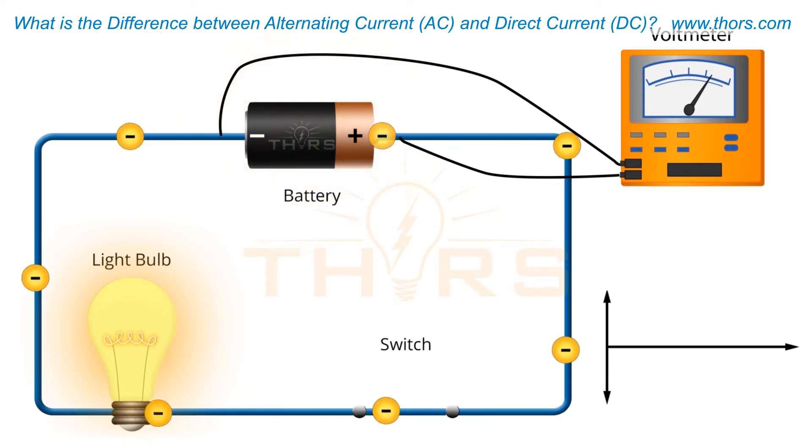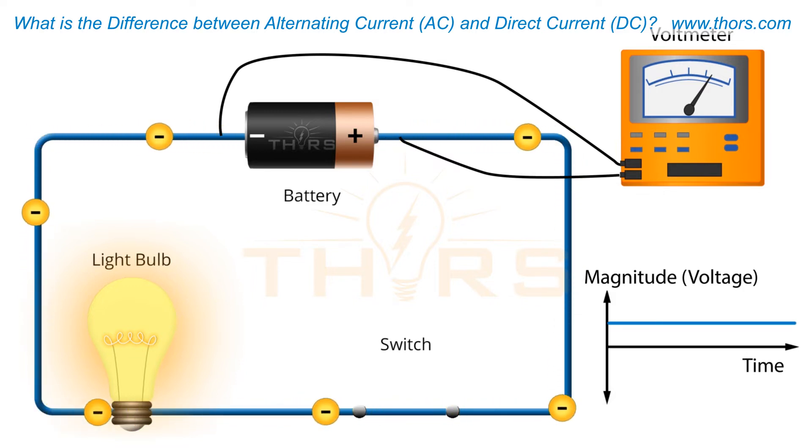If the voltage of a DC circuit was graphed with magnitude on the y-axis and time on the x-axis, the graph would be a straight line.